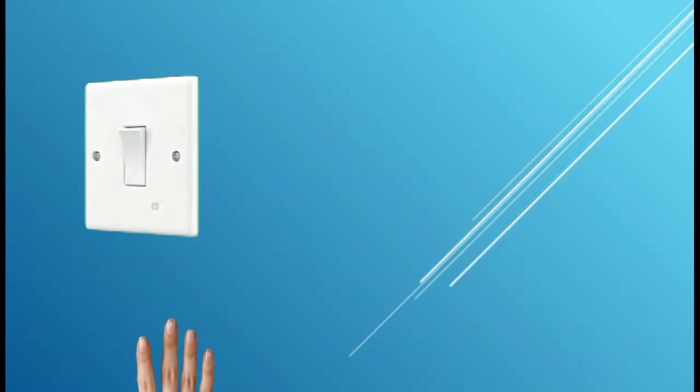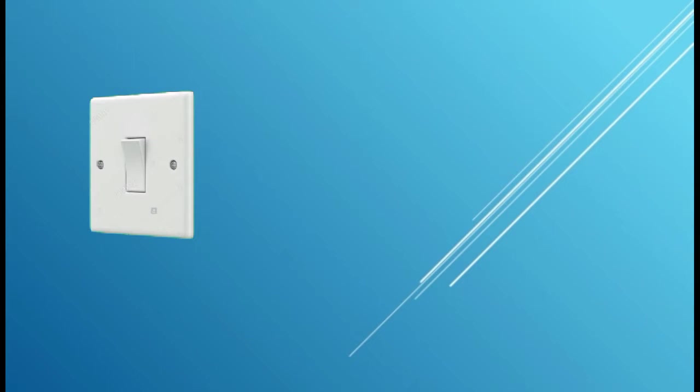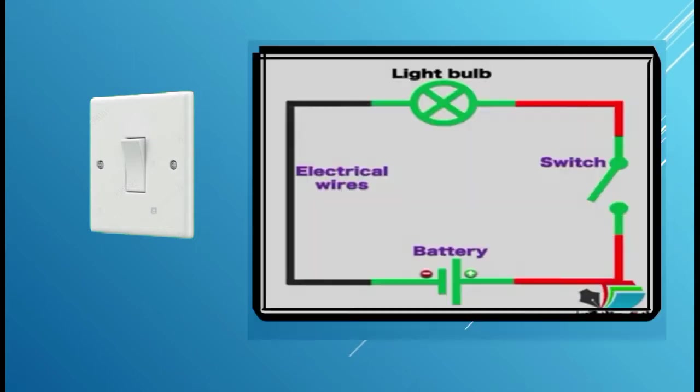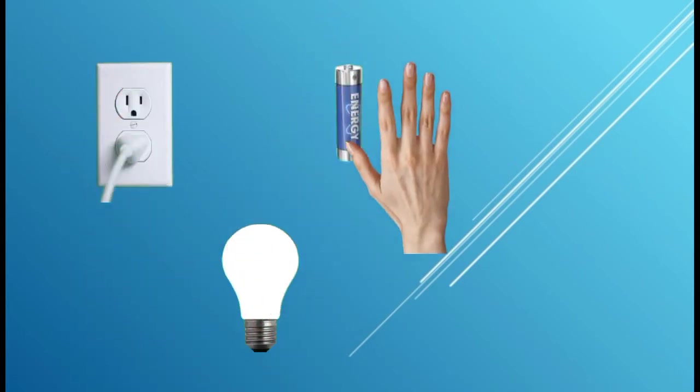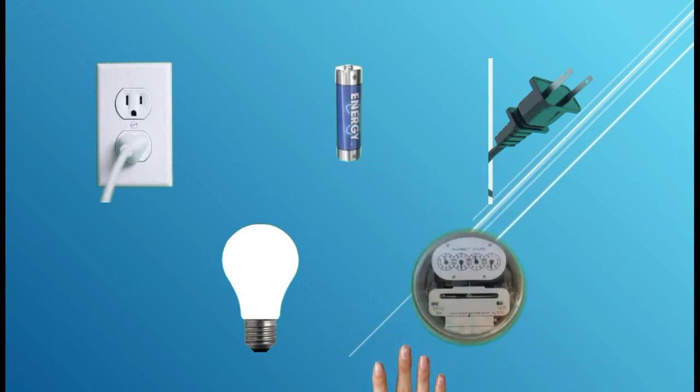For example, a switch. How do we draw a switch? Sometimes we draw it based on the actual appearance. But when it comes to electrical diagrams or electrical plans, there is a certain symbol that represents a switch for an electrician to easily understand in the plan what kind of fixture is that. Even our outlet, lamp, battery, plug, and even our electric meter in our house, there is a certain symbol that represents these electrical materials and fixtures.